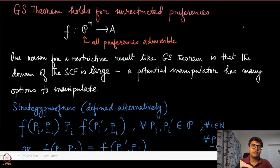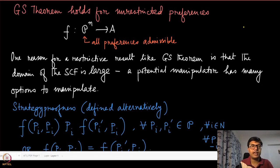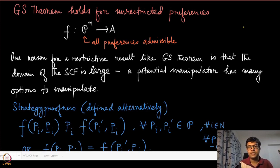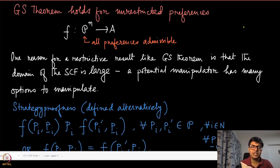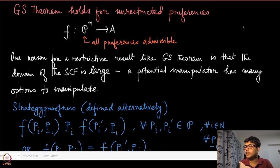The Gibbard-Satterthwaite theorem is important and quite significant, but it still gives a negative result: you cannot really have any non-dictatorial social choice function with those two very desirable properties, onto-ness and strategy-proofness. Is that the end of the story for social choice functions? It turns out that it is not, because the Gibbard-Satterthwaite result holds only for the case when all preferences are admissible.